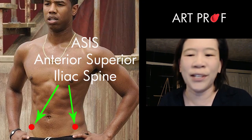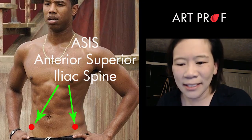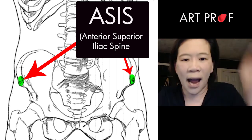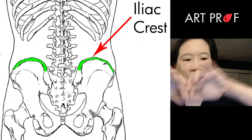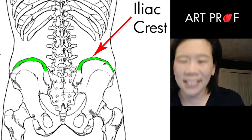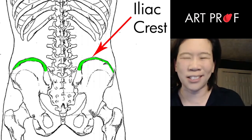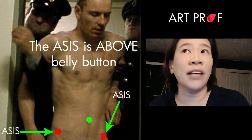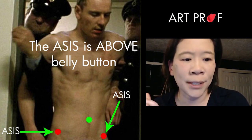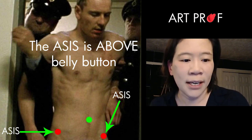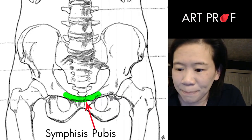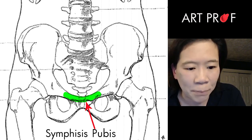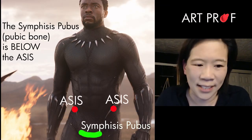The anterior superior iliac spine — two little tips at the end of the pelvis. That round butterfly part of the pelvis is the iliac crest, the top of it. The ASIS — you have to understand how it relates to the belly button, because it's above the belly button. The symphysis pubis is another bony landmark; it's below the ASIS.